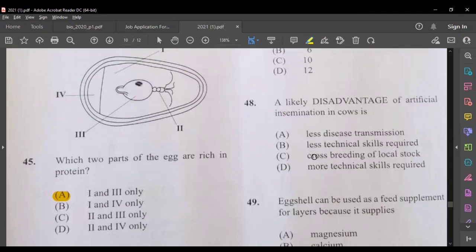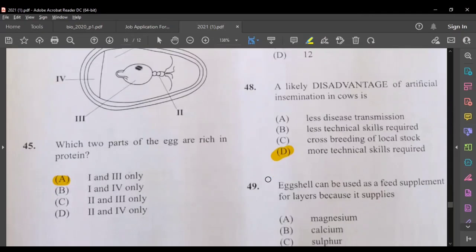A likely disadvantage of artificial insemination in cows is less disease transmission, less technical skill required, no you would need more. Cross-breeding of local stock, more technical skills. Yes, you need technical skill when you are carrying out artificial insemination.